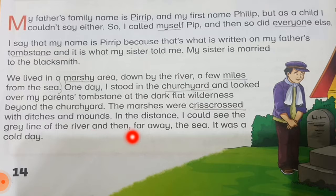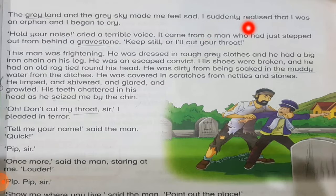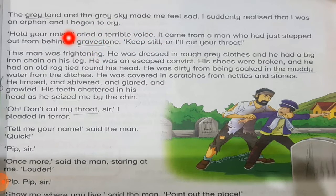In the distance I could see the gray line of the river and, far away, the sea. It was a cold day. The gray land and the gray sky made me feel sad. I suddenly realized that I was an orphan and I began to cry. The atmosphere was also sad, and he remembered that he had no parents, so he started crying.